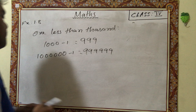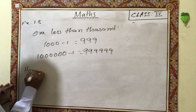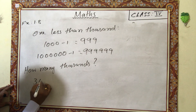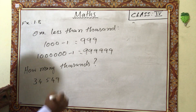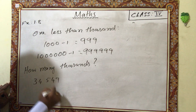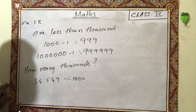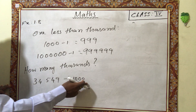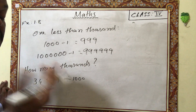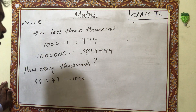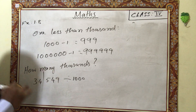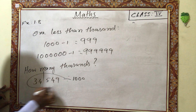How many thousands are there in a given number? For example, 34,549. For this type of question you divide by 1000, but there is no need to actually divide. Simply place the digit positions: ones, tens, hundreds, thousands. Put one line here — there are 34 thousands in this number.